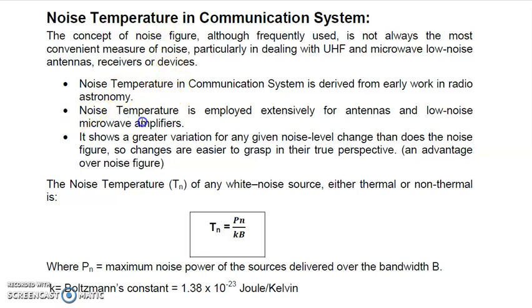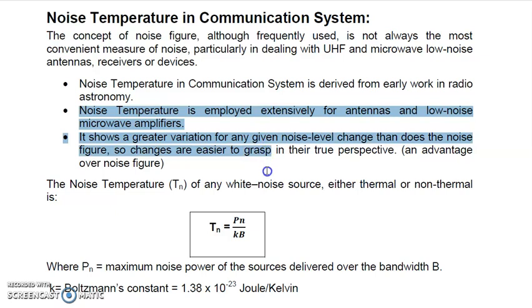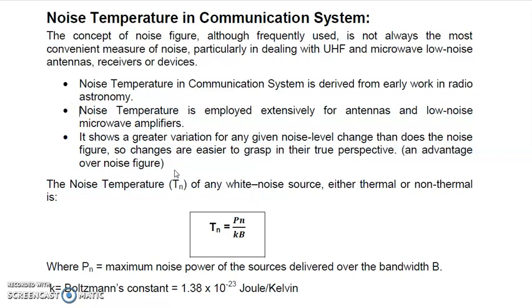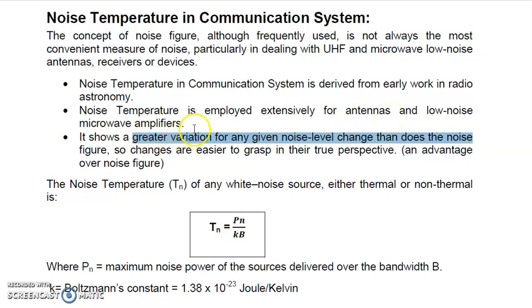Noise temperature is employed extensively for antennas and low power, low noise microwave amplifiers. Its advantage over noise figure is that it shows greater variation for any given noise level change. This means that noise temperature changes are easier to grasp in true perspective when we are considering antennas and low noise microwave amplifiers.